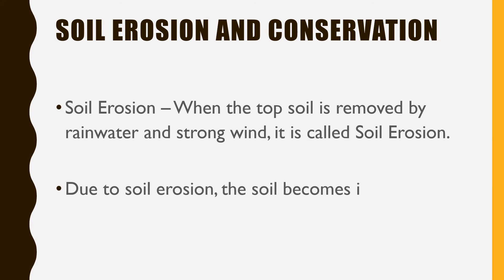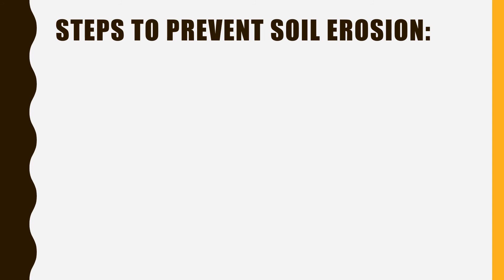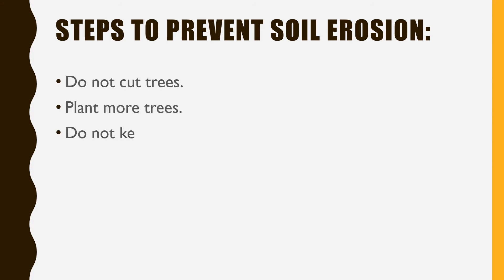Because of soil erosion the soil becomes infertile, so we should prevent it. Some steps to prevent soil erosion are: do not cut trees; plant more trees; do not keep the fields barren — we should not leave the fields without any crop and should cultivate some or the other crop in the fields, as leaving fields empty and barren may lead to infertility or soil erosion.